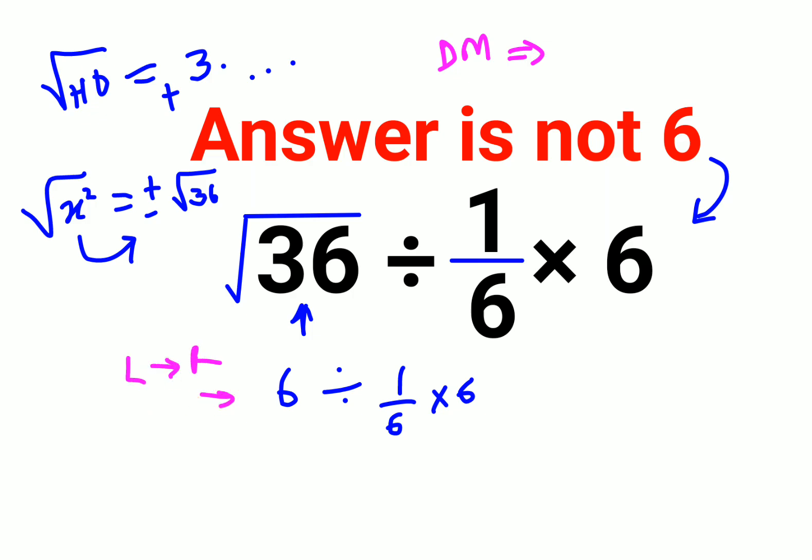So first what we will do is first we will do the division. Whenever you have division you will follow the rule of KCF where K stands for keeping the first number as it is, C stands for changing the division sign to multiplication, and F stands for flipping or taking reciprocal of 1 upon 6 which is 6, and we will continue multiplying the rest of the into 6 as it is.